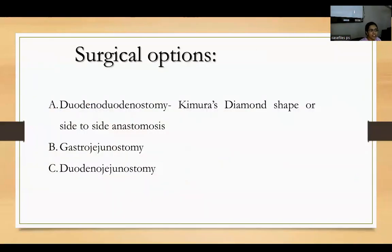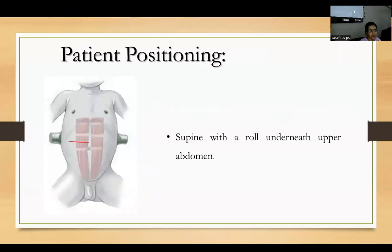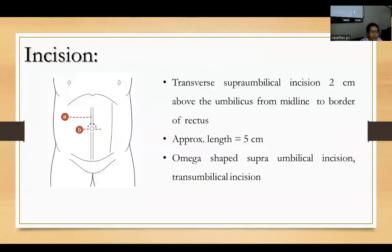Surgical options for duodenal atresia include duodenoduodenostomy — Kimura diamond-shaped or side-to-side anastomosis — gastrojejunostomy, and duodenojejunostomy. The patient is positioned supine with a roll underneath the abdomen. For Kimura's duodenoduodenostomy, a transverse supraumbilical 2 cm incision is placed above the umbilicus from the midline to the lateral border of the rectus, approximately 5 cm in length. An omega-shaped supraumbilical or transumbilical incision can also be made.